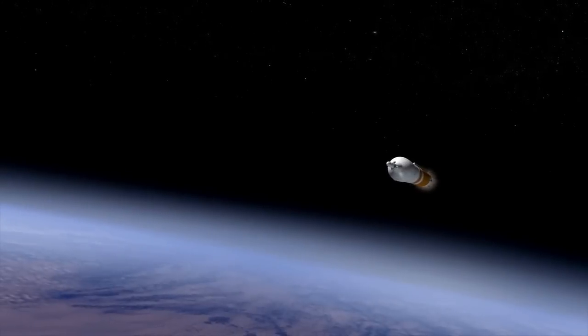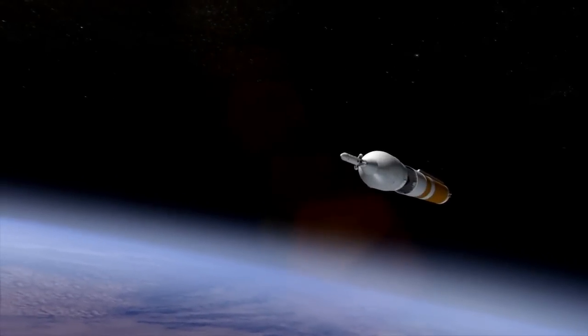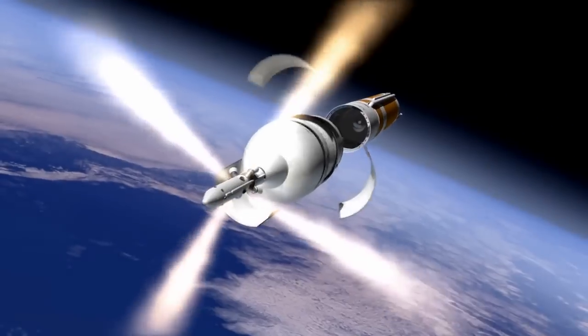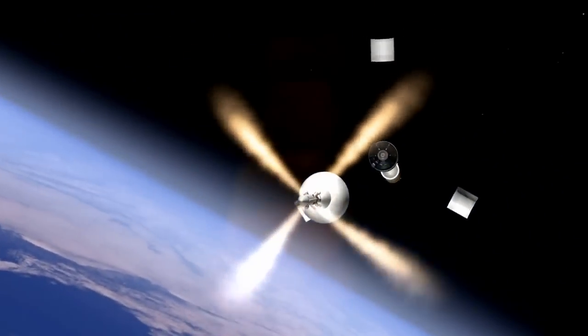As it punches into Earth orbit, Orion will jettison its launch abort system. The abort system is a safety feature designed to pull Orion and its crew out of danger if there were a problem with the rocket during ascent.